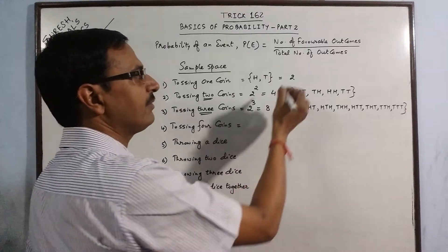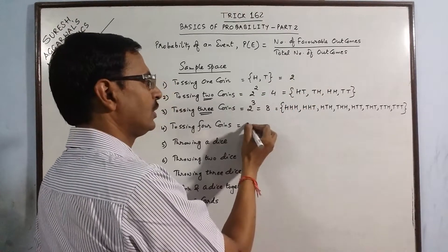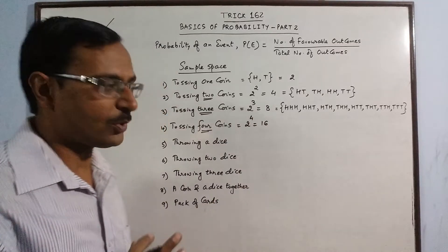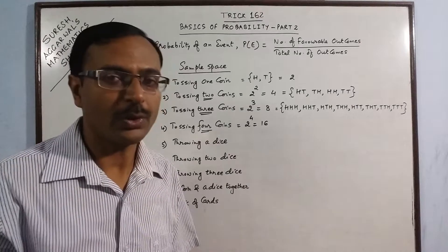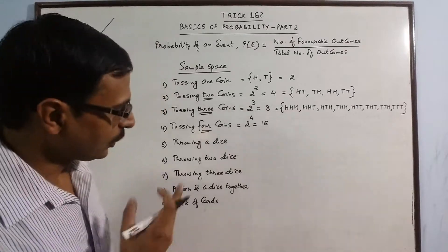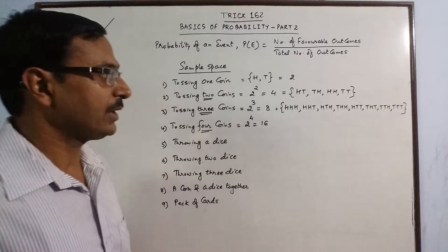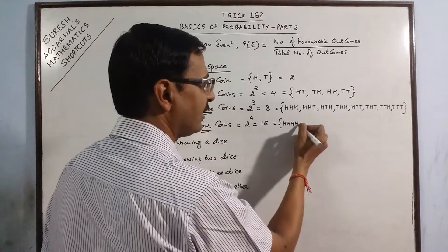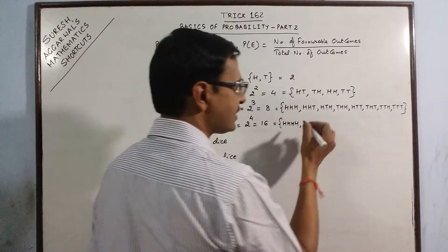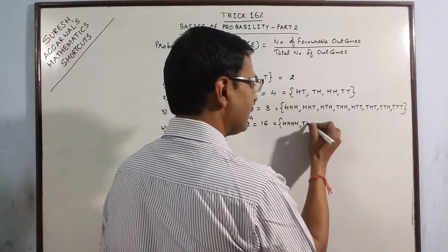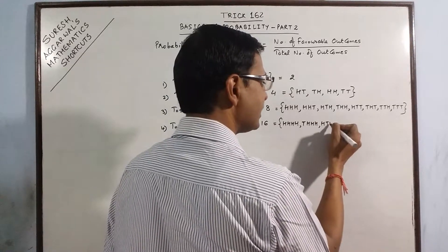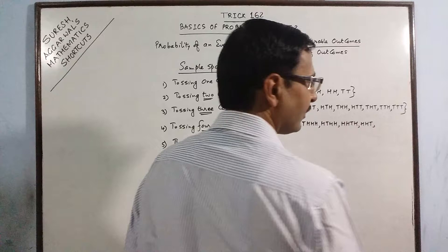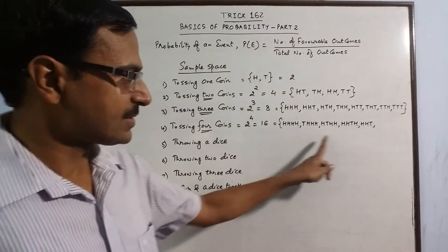Generalizing further, for 4 coins you have 2 raised to the power 4, giving 16 possible outcomes when you throw 4 coins together. You start with all 4 heads, then move to 3 heads — which means 1 tail. The 3-head combinations are: T-H-H-H, H-T-H-H, H-H-T-H, and H-H-H-T.